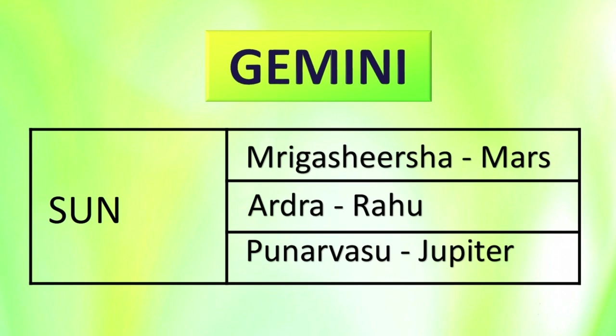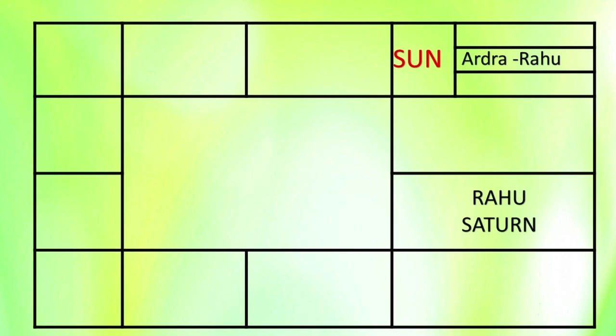You also know how to predict the effect of a planet if the Sun is present in the star Punarvasu, whose Nakshatra lord is Jupiter. But many of you will have doubts how to predict the effects of a planet if it resides in the star of Ardhra, whose star lord is Rahu. I have already explained how to make predictions in such cases in previous videos. Please remember: if a planet resides in a star whose Nakshatra lord is Rahu, then the planet will not deliver good effects.